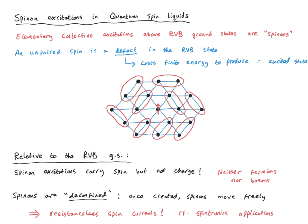Why are spinons deconfined? Imagine a specific configuration with a free spin in the centre of the lattice. By simply changing which states are in a singlet, we can move this spin onto a neighbouring site — both configurations have exactly the same energy, so it costs nothing to move the spin. There's also no kinetic barrier because all configurations are in resonance with each other. This can happen repeatedly, moving the spin arbitrarily far from its original position. Doing this over and over allows the defect to move freely throughout the lattice.